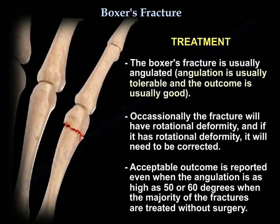Boxer's fracture is usually angulated. The angulation is usually tolerable and the outcome is usually good. Occasionally it has rotational deformity, and if it does, it will need to be corrected. Acceptable outcomes are reported even when angulation is as high as 50 to 60 degrees, when the majority of fractures are treated without surgery.